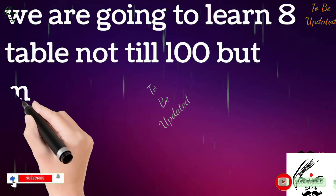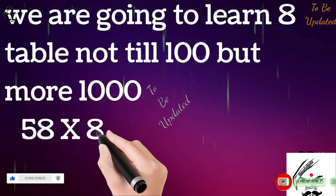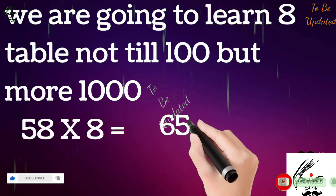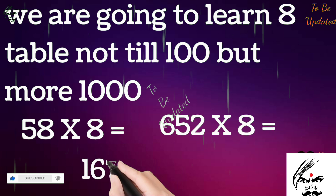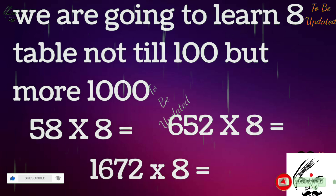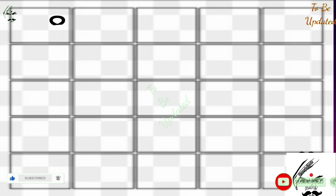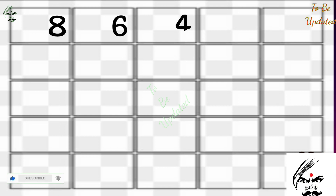We are going to learn the 8 table, not just till 100 but more than 1000. 8's are 8, 2 8's are 16, 3 8's are 24. This is how we are going to learn the 8 table - by writing in descending order.